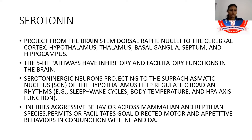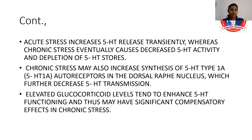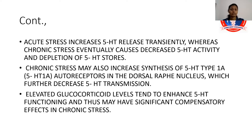Serotonin inhibits aggressive behavior across mammalian and reptilian species, and permits or facilitates goal-directed motor and appetitive behaviors in conjunction with norepinephrine and dopamine. Acute stress increases serotonin release transiently, whereas chronic stress causes decreased serotonin activity and depletion of 5-HT stores. Chronic stress may also increase synthesis of 5-HT type 1A autoreceptors in the dorsal raphe nuclei, further decreasing serotonin transmission. Elevated glucocorticoid levels tend to enhance 5-HT functioning, potentially having compensatory effects in chronic stress.